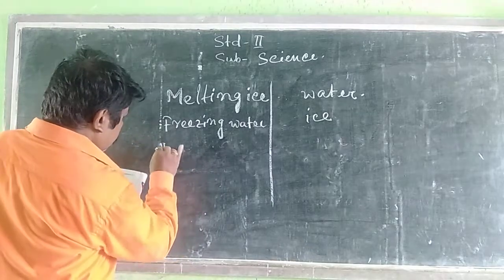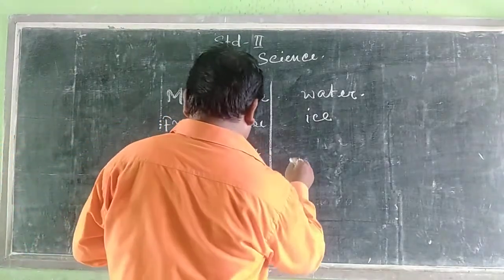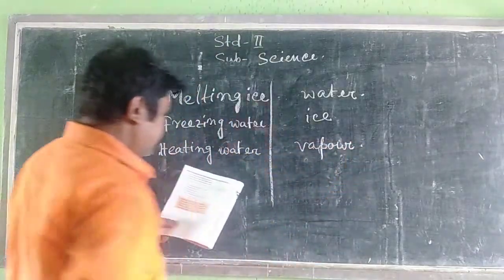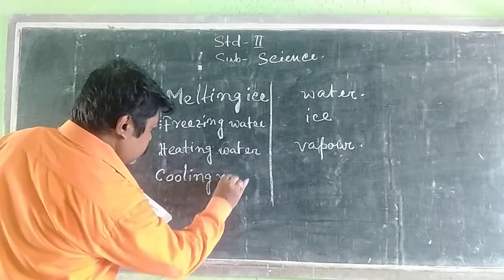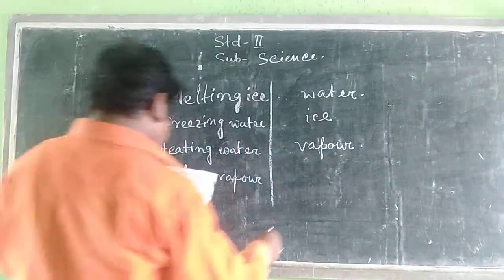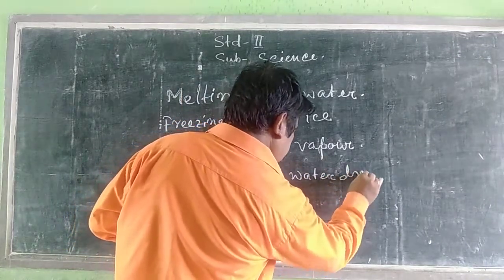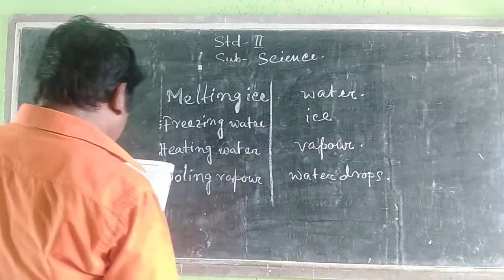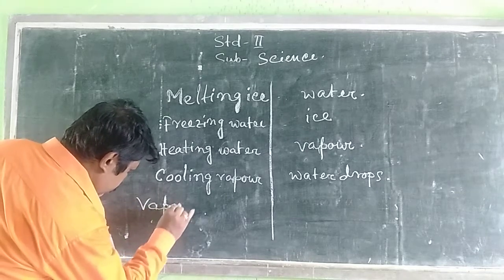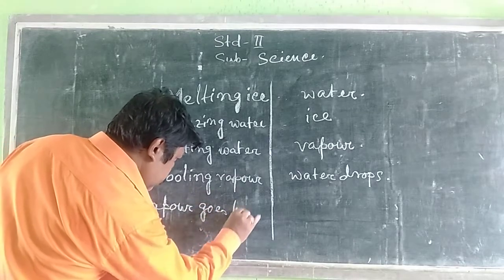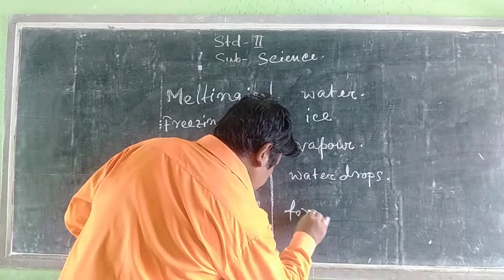Heating water changes to vapour. Cooling vapour — when vapour goes high, it forms a water drop and then forms a cloud.